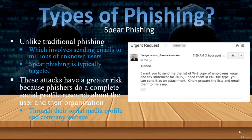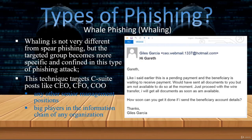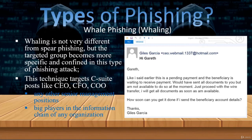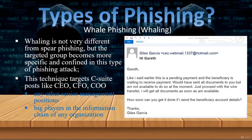Cybercriminals do their homework and study a person's social media profile and company websites. They learn who people are and request tasks specifically related to their job function. Here you see a person — likely another employee — asking for sensitive employee information to be emailed. As a precaution, the employee should verify the request. Phishing tactics get even more targeted with whale phishing, where cybercriminals use top-tier players in an organization to strong-arm subordinates. Out of fear of denying a top-level manager, many whaling attempts are successful. The employee only had to notice the email address was written incorrectly or not part of the organization's email.